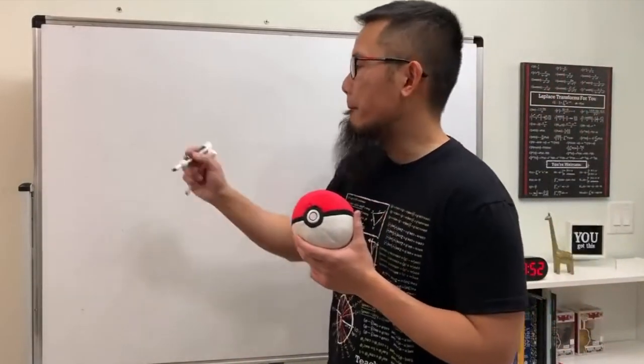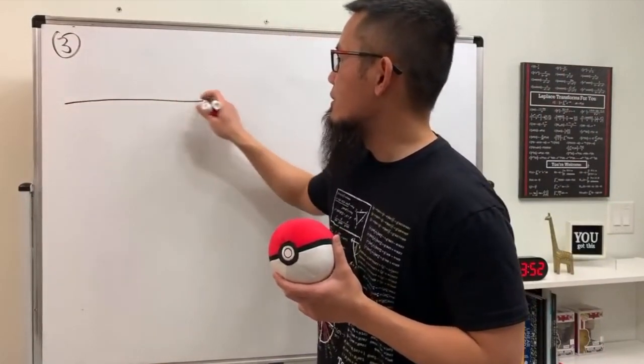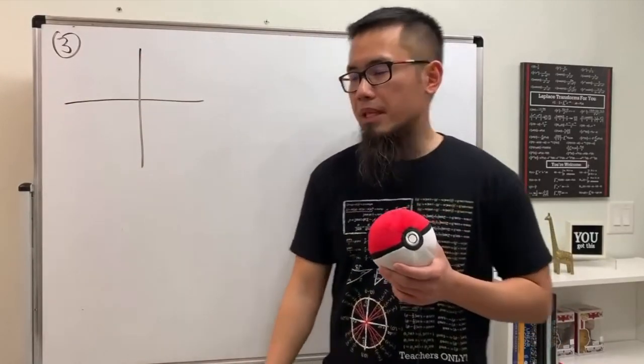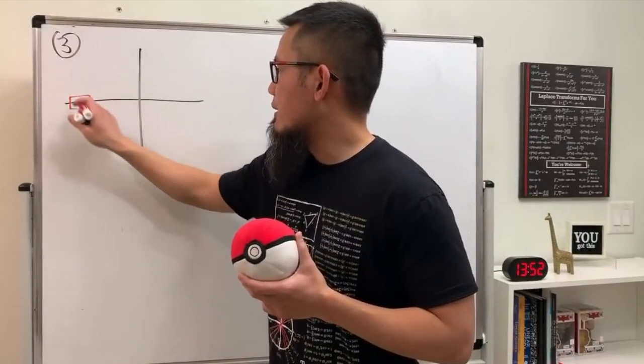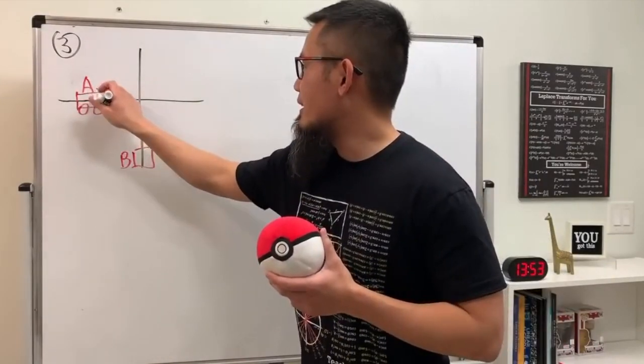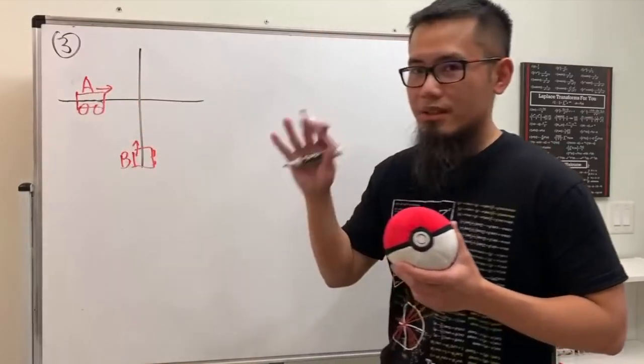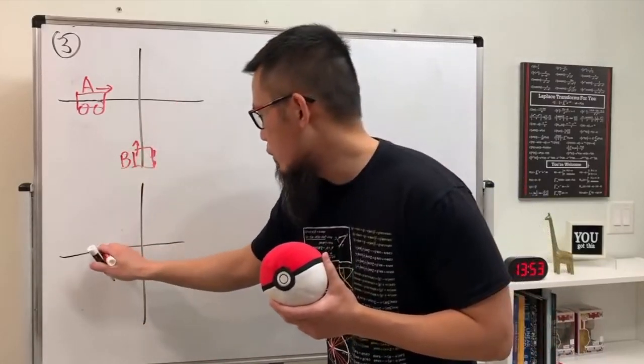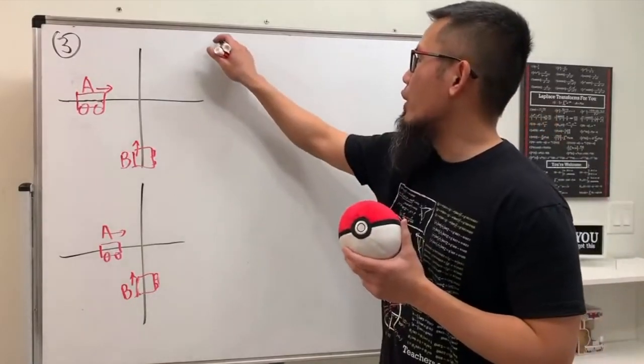Problem three: Car A is traveling west at 50 miles per hour and car B is traveling north at 60 miles per hour. They are heading to the same intersection. At what rate are the cars approaching each other when car A is 0.3 miles and car B is 0.4 miles from the intersection? Let's draw two pictures first — here is the intersection.